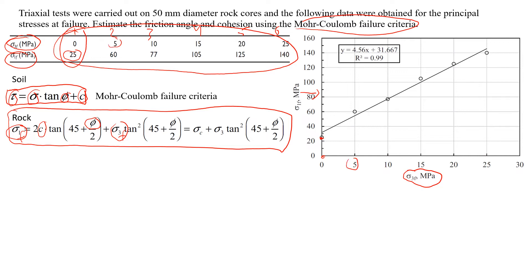And sigma 1 will be 60, so we just continue plotting the data and we're gonna have six points. And what we'll need to do next is to draw a line of best fit.